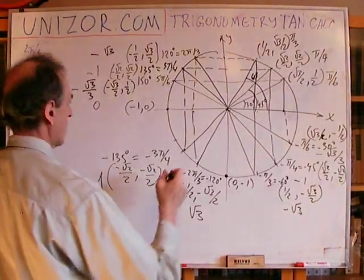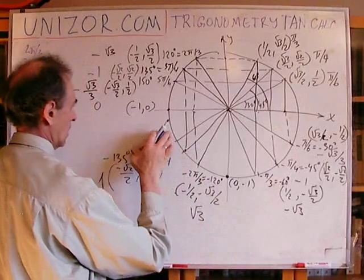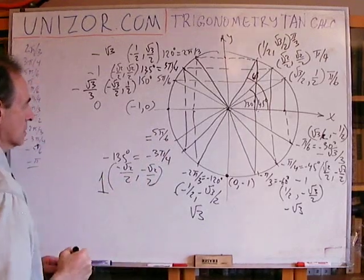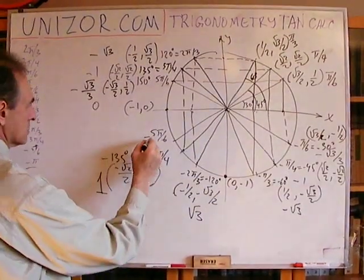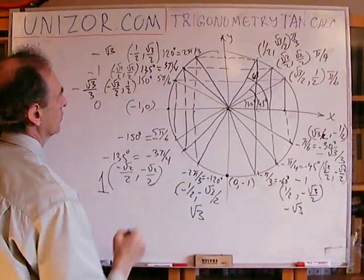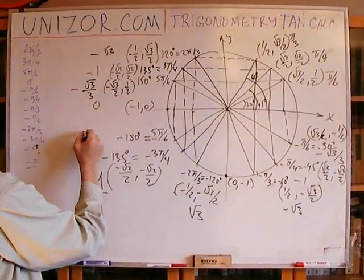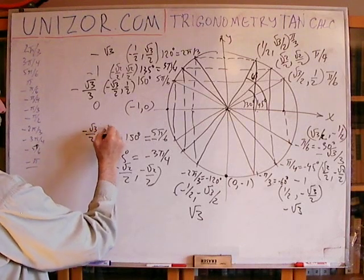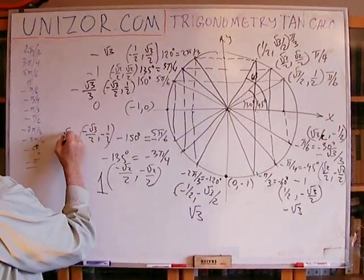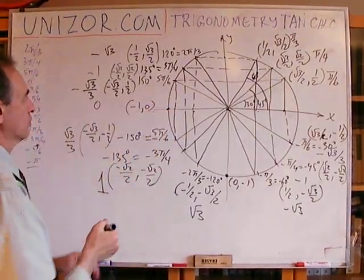Next is −5π/6, which is −150 degrees. By symmetry with +5π/6, the coordinates are (−√3/2, −1/2). The ratio is 1/√3, which equals √3/3. And −π is the same point as π, so the tangent is again 0.